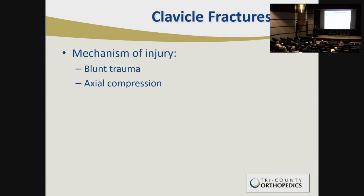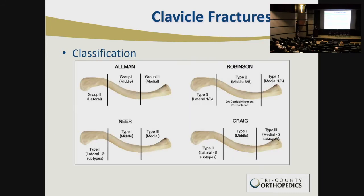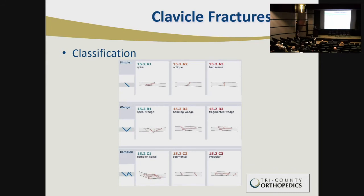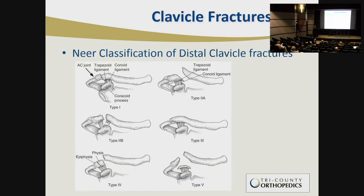The mechanism of injury tends to be blunt trauma or axial compression. In terms of classifications, the most classic ones — there are four different named classifications — are all basically the same: middle, medial, and lateral, with some variation. There's also the AO classification that classifies into simple, wedge, and complex, with further subclassification by location. Unique to this is the distal clavicle, where the Neer classification has implications for the stability of the acromioclavicular construct.